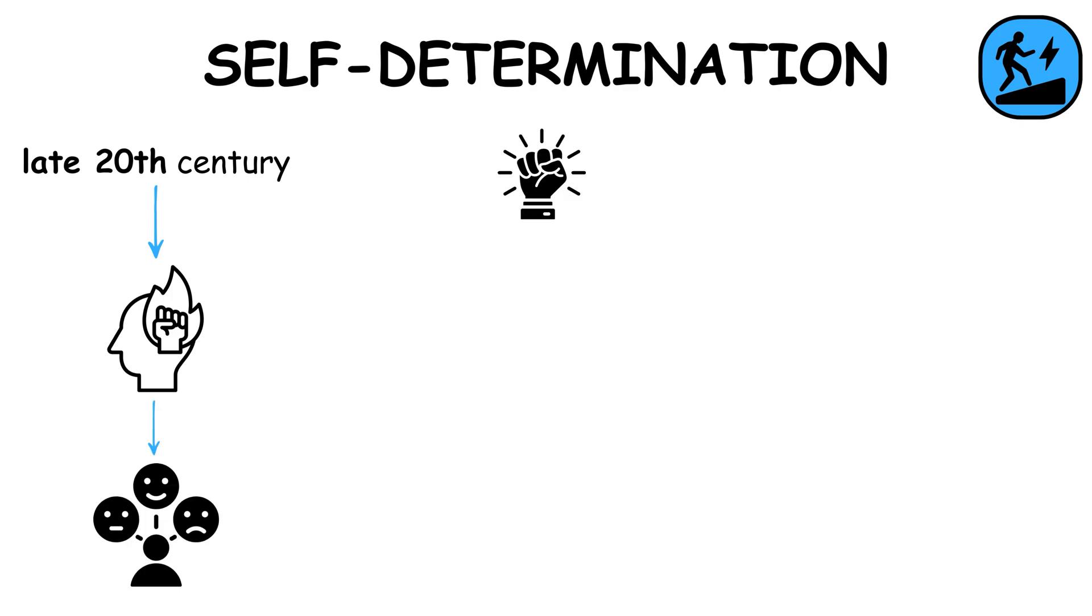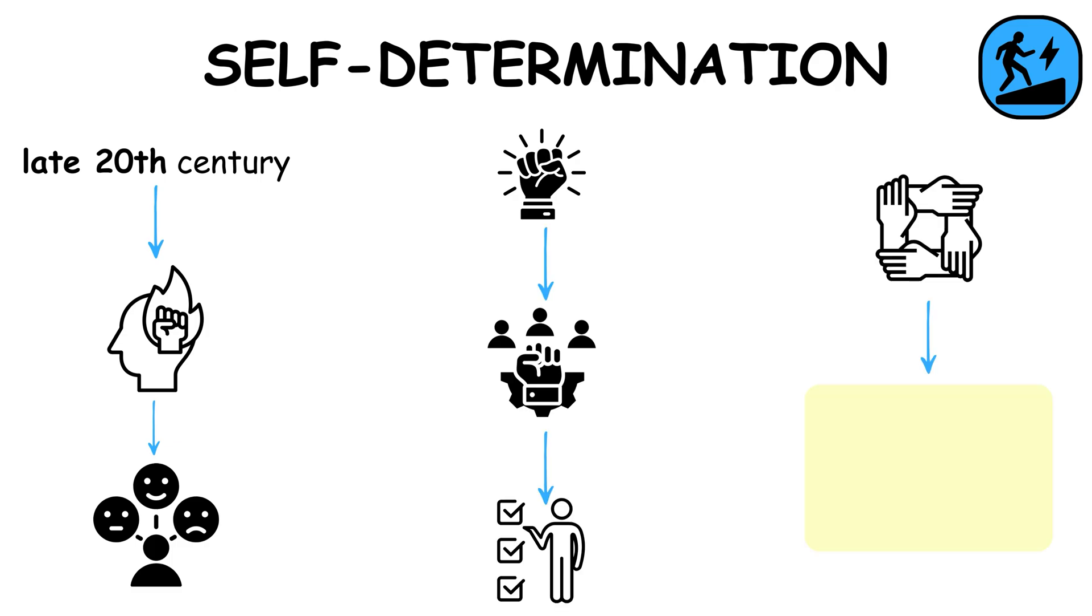Self-determination theory, developed in the late 20th century, emphasizes the role of intrinsic motivation in driving human behavior. It suggests that people are motivated by a need for autonomy, competence, and relatedness, influencing behavior in education, work, and personal growth.